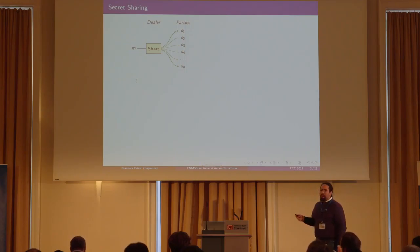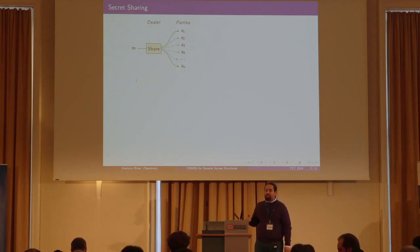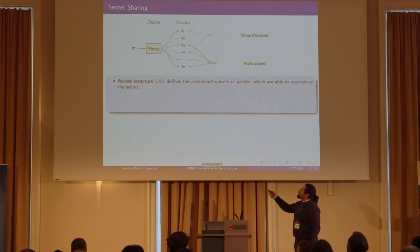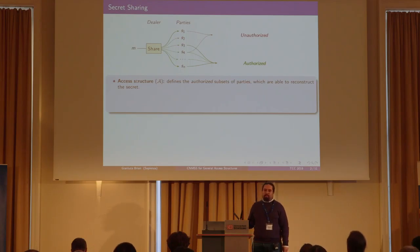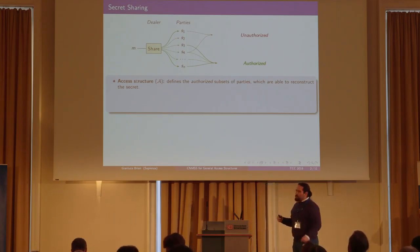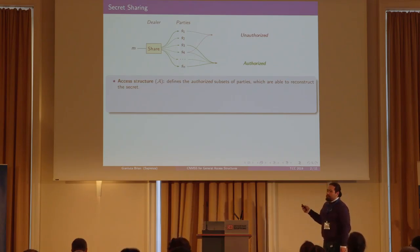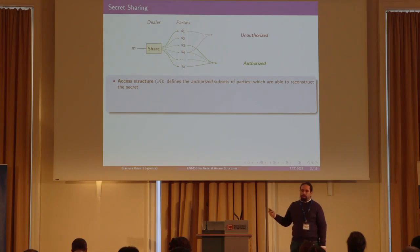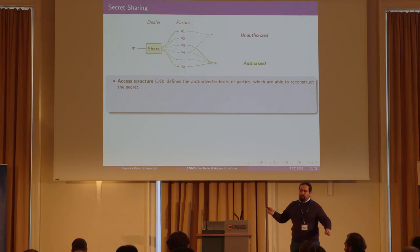In secret sharing, there is one party called the dealer that has a secret message and wants to share it among n other parties S1 through SN, in such a way that only certain subsets of the set of parties can reconstruct the message. In particular, we have the notion of access structure — a monotone class of subsets of the set of parties. We have authorized subsets belonging to the access structure, and unauthorized subsets which are all the other subsets.